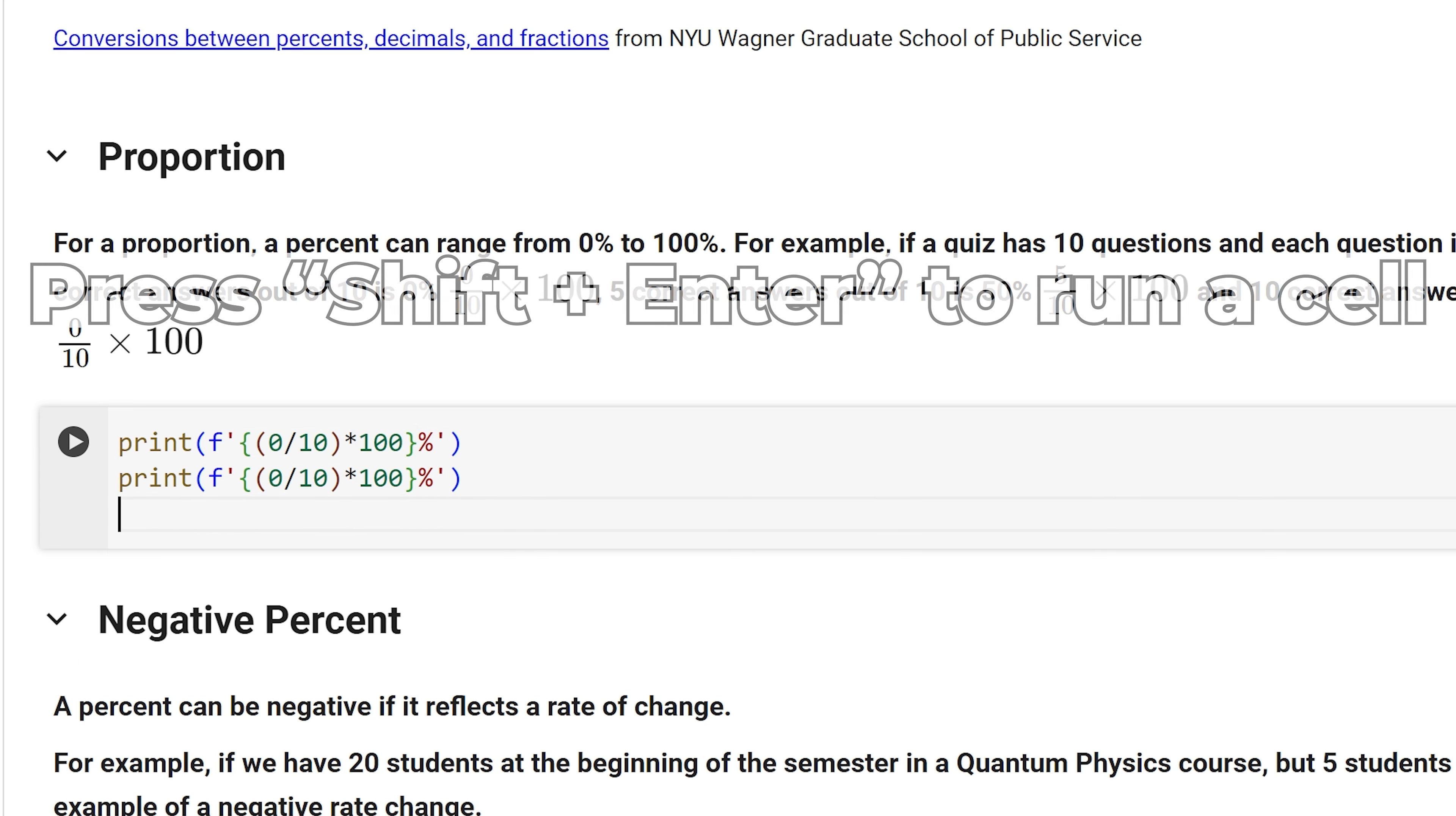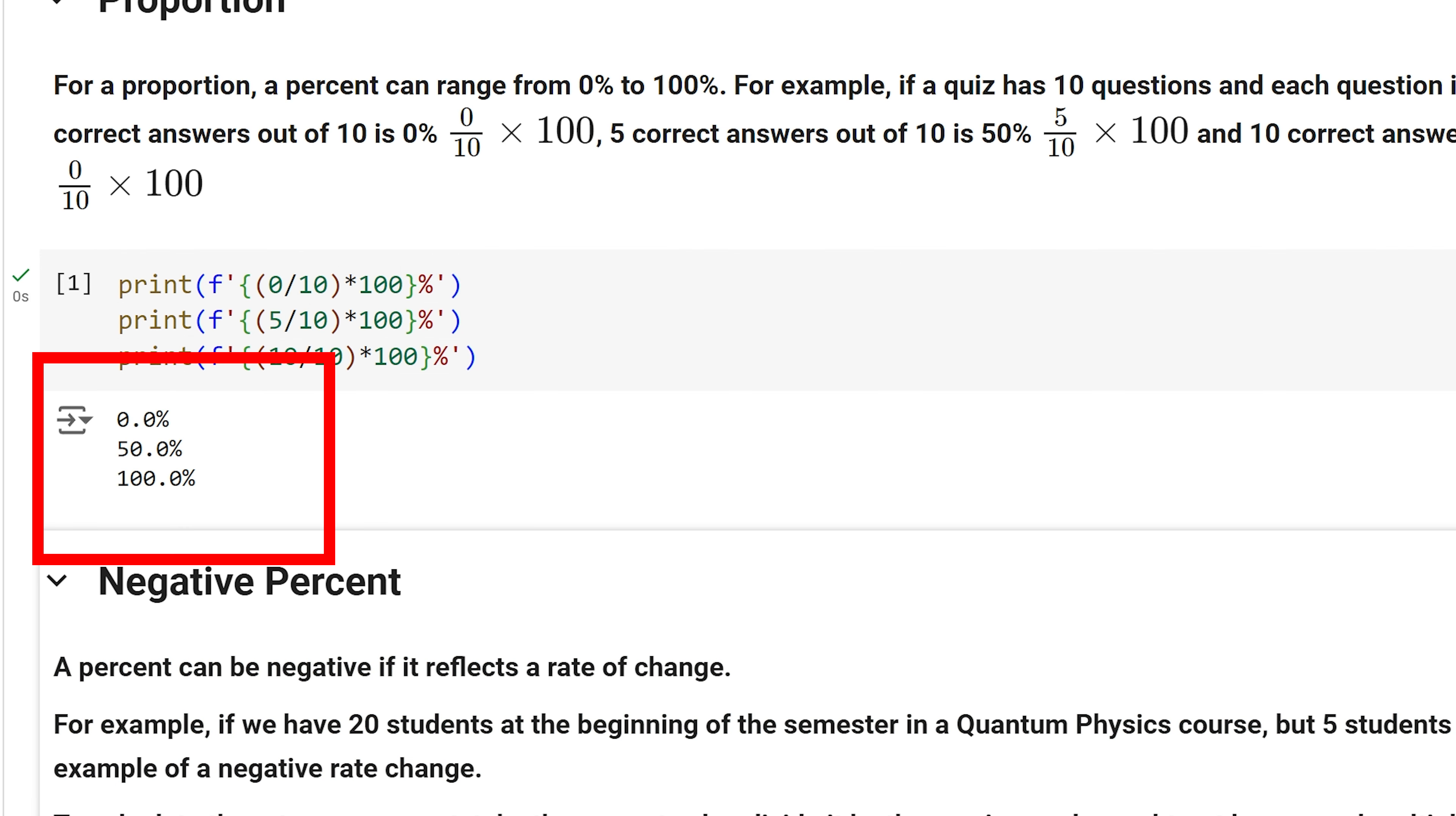I am going to copy and create two more lines, one for 10 correct answers and one for 5 correct answers. When we run it, we can see that we have the correct proportions. For 0 correct answers, we have 0 percent. For 5 correct answers, we have 50 percent. And for 10 correct answers, we have 100 percent.